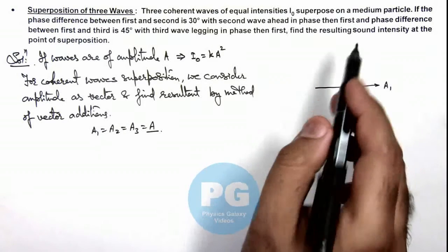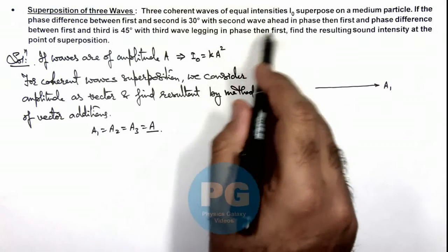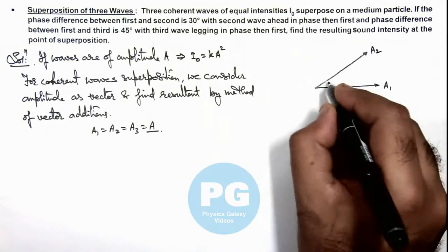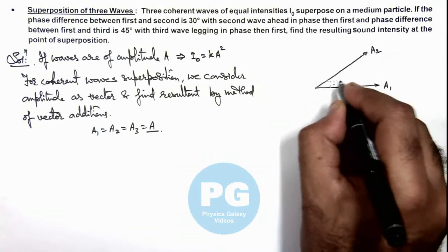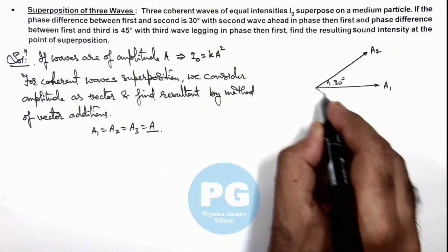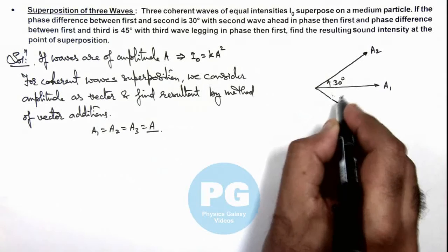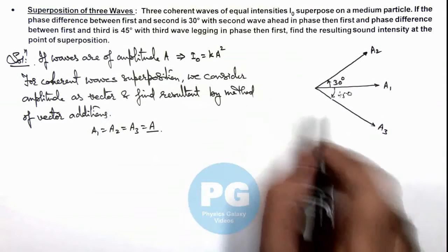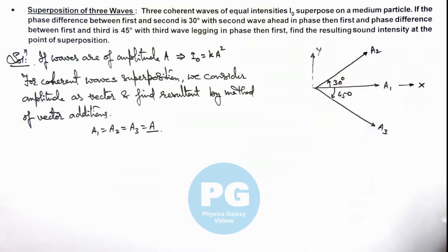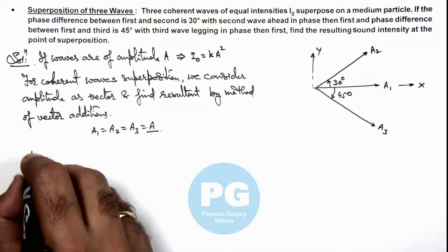The first wave has amplitude A₁. The second is ahead in phase by 30 degrees, so we can write another amplitude A₂ which is equal in magnitude, ahead with respect to the first wave by 30 degrees. The third wave is lagging in phase by 45 degrees—this is A₃ lagging by 45 degrees. To find the resulting amplitude we can treat this direction as x and vertical direction as y, and here we can analyze resulting amplitude.